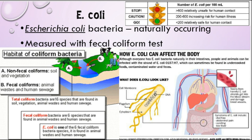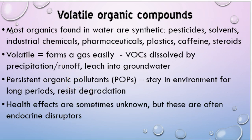That sums up most of the pathogens you should be aware of — there are lots more, but those are some of the major ones we encounter in water. Now let's talk about some specific compounds. One class you need to know about are called volatile organic compounds, or VOCs. You should remember from biology and chemistry that organic compounds are anything that has carbon and hydrogen in them — usually found in chains or rings, so that would be things like sugars, amino acids, and oils. Most organic contaminants in water are synthetics — things that were put there that don't naturally belong in the environment, like pesticides, solvents, industrial chemicals, drugs, plastics, caffeine, and various steroid compounds.